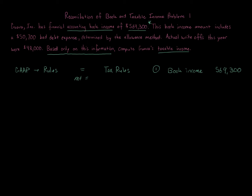We're really only given one specific aspect where financial accounting differs from tax here, and that deals with accounts receivable and bad debt expense. We're told that the book income includes a $50,700 bad debt expense, which is what's on the financial accounting income statement, determined under the allowance method.